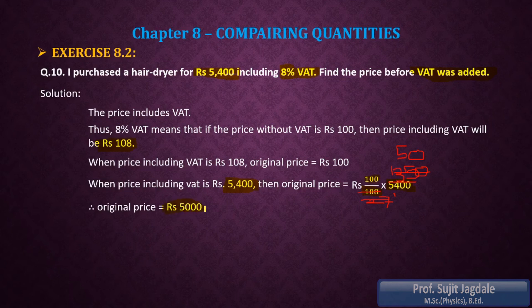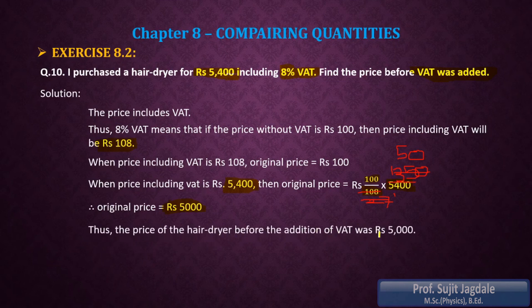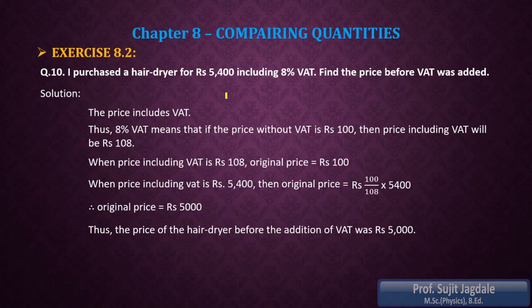So the original price was Rs 5000 before adding the VAT of 8%, and after adding that 8% VAT you get Rs 5400. Thus the price of the hair dryer before addition of VAT is Rs 5000. In this way you can solve examples for sales tax, VAT, or any other profit percent, loss percent, increase or decrease percent — using the formulas for profit and loss which we had already used previously.